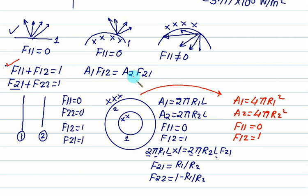Next we apply reciprocal rule. Reciprocal rule is 4 pi R1 square into F12, F12 is 1, equals to 4 pi R2 square into F21.